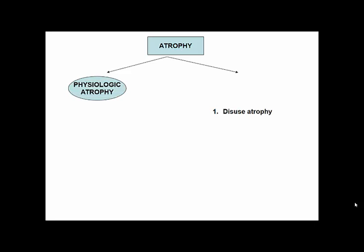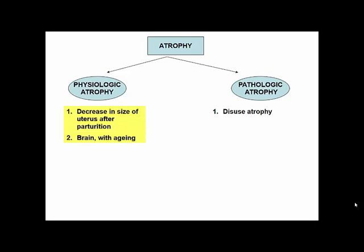There are two types of atrophy: physiologic and pathologic. Physiologic atrophy is common during early development — for example, during embryogenesis, structures such as the notochord and thyroglossal duct undergo atrophy in fetal life. The most important example is decrease in the size of the uterus after parturition or childbirth, also called involution. Another example is atrophy of the brain with aging.